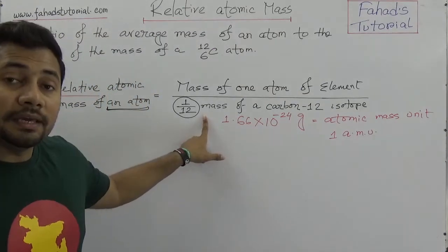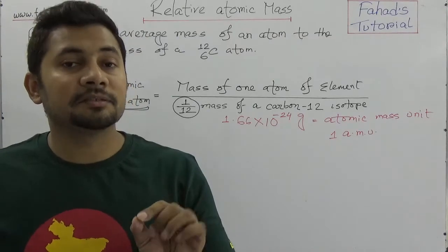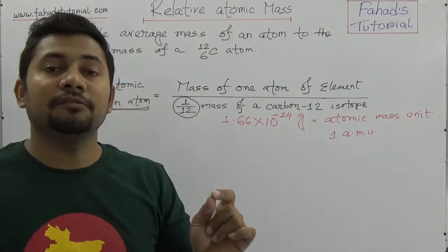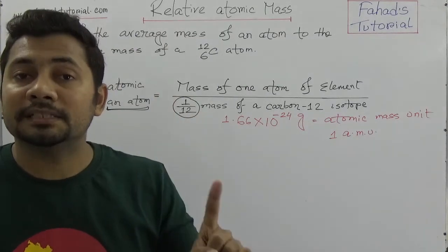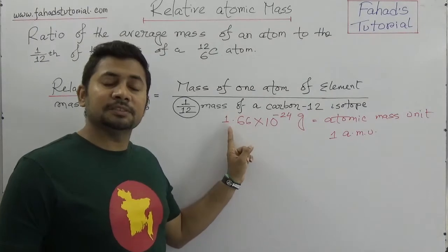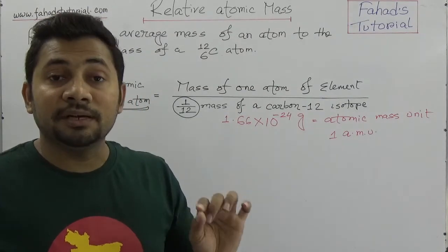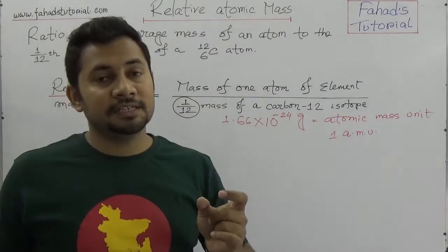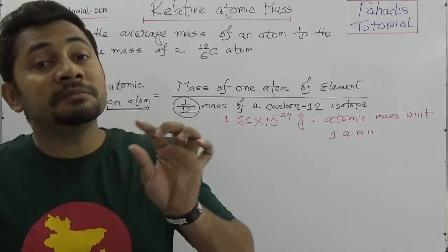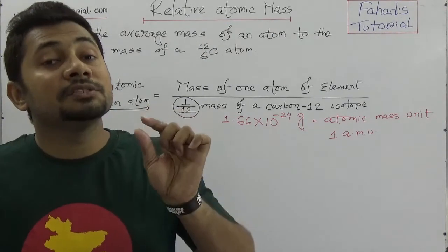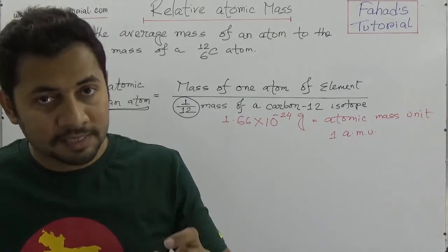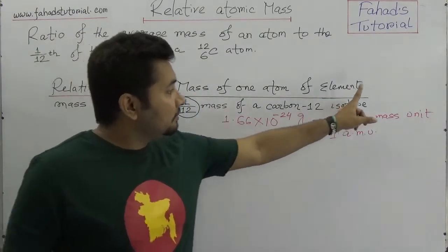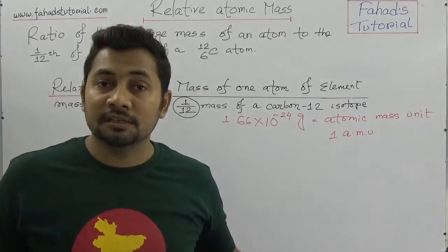So one AMU is 1.66 × 10⁻²⁴ grams. We will calculate the relative atomic mass of any atom by dividing by this value, because this is the ratio — the one-twelfth mass of carbon-12, which is a fixed value of 1.66 × 10⁻²⁴ grams. Most importantly, there is no unit of relative atomic mass, because it is the ratio of similar quantities — mass divided by mass, grams divided by grams. So there is no unit of relative atomic mass.